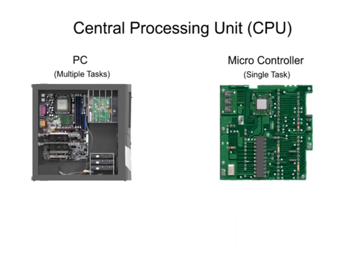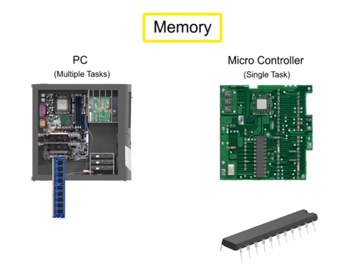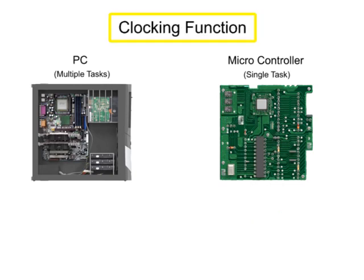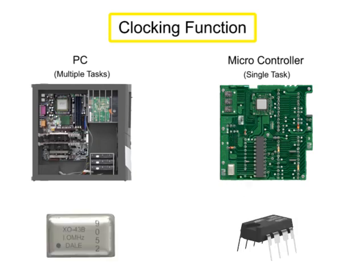The microcontroller also has memory similar to the RAM and hard drive of a PC. The memory of a microcontroller, like that of a PC, stores commands that can be used when needed to perform a specific function or task. A clocking function is also present in a microcontroller to control the speed at which computer processing is carried out. An oscillator is employed to perform this clocking function, which impacts how the microcontroller performs under various operational modes.